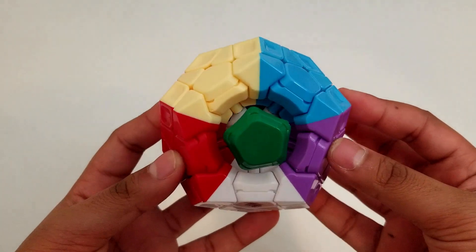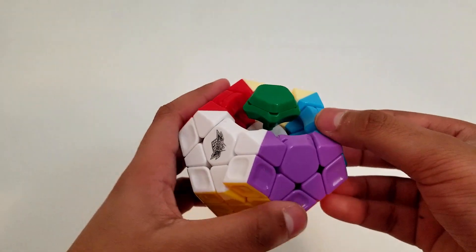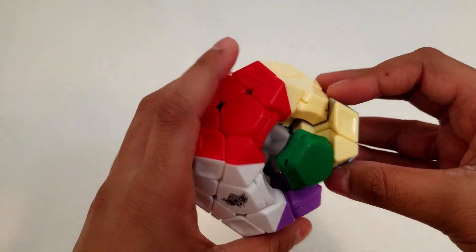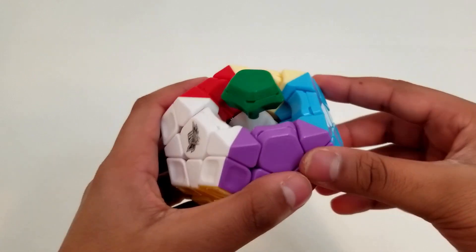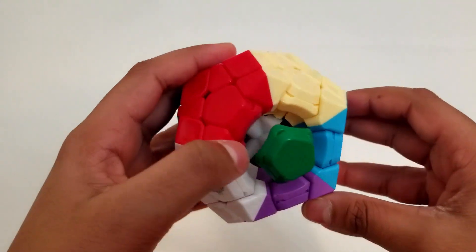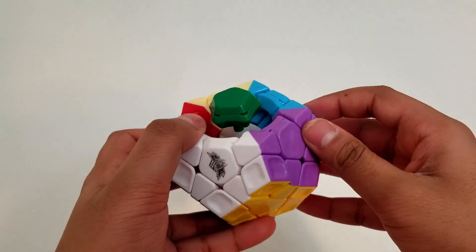If you take a look inside the cube, each connector piece works together to move the pieces on the cube. Also, the connecting pieces together form a ball, which allows the puzzle to rotate smoothly.